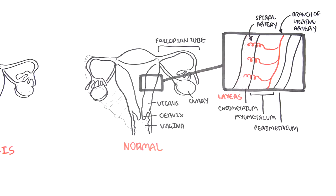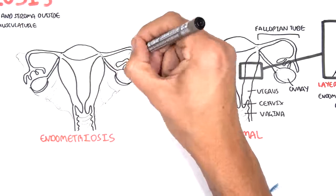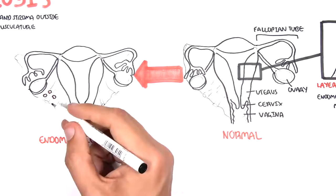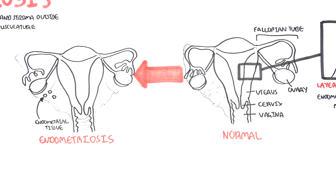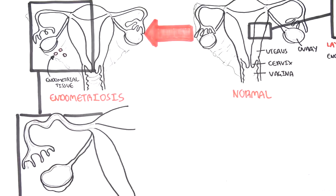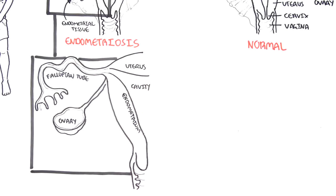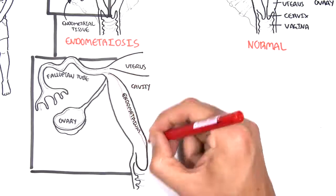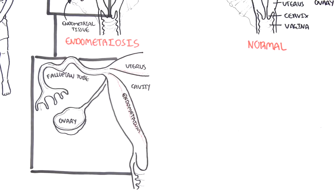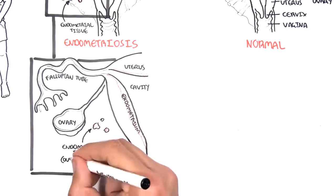A woman with a normal reproductive tract can develop endometriosis. As we have learned, endometriosis is where you have the presence of endometrial tissue outside the uterine cavity and uterine musculature. And because it's endometrial tissue, it will also react to the hormones, so when you have a period, it will also react. Here you have the left ovary, the fallopian tube, and the uterus. Here is endometrial tissue present outside the uterus, and this is characteristic of endometriosis.